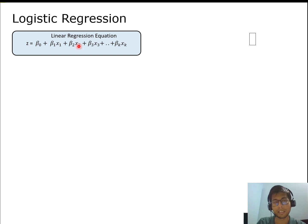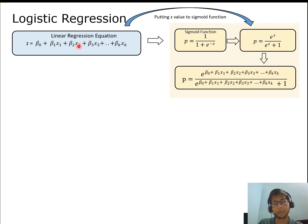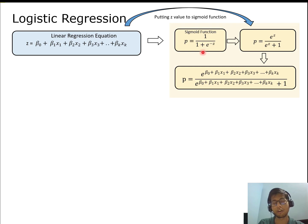Logistic regression is a transformed linear regression. To perform that transformation we use the sigmoid function. The sigmoid function is: p = 1 / (1 + e^(−z)). Looking closely, the denominator is always greater than one, and it is a positive value, so dividing one by any value greater than one always gives a result between zero and one. Therefore, p will always take a value between zero and one.